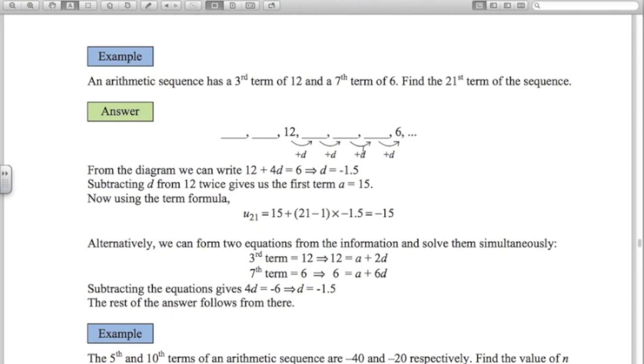That must mean that each one of these jumps is minus 1.5. We could write this little formula out: 12 plus 4 lots of D is equal to 6. So I've got D. I can then work backwards. This one here must be 13.5 because we went down 1.5 to get 12. So this one here must be 15. So the first term is 15.